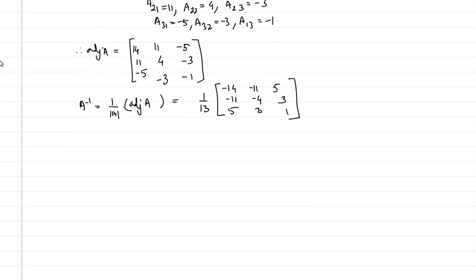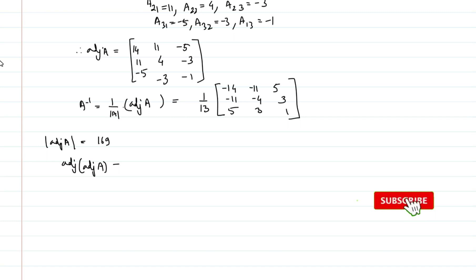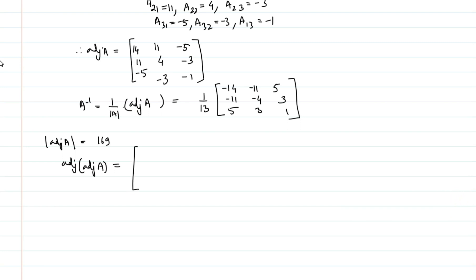Now I need to find adjoint of A whole inverse. First let me find the determinant value of adjoint of A. From the matrix we can calculate the determinant value of adjoint of A to be 169. Then we need to find adjoint of adjoint of A. Taking the transpose of the cofactor matrix of adjoint of A directly, that gives minus 13, 26, minus 13, 26, minus 39.